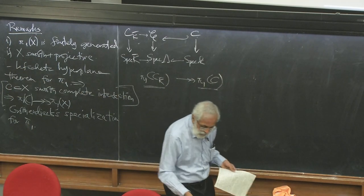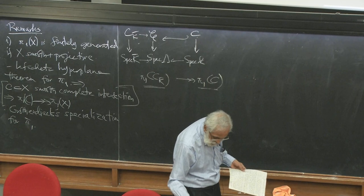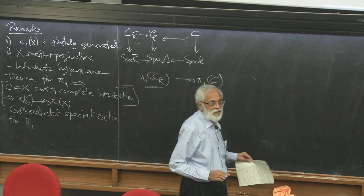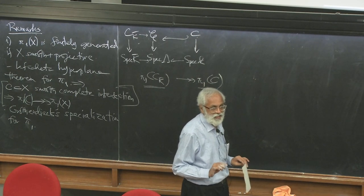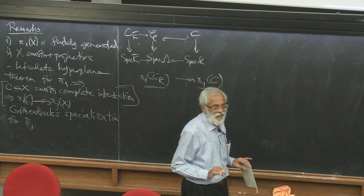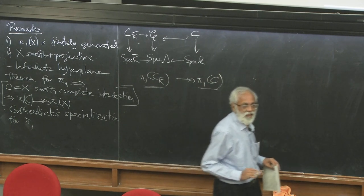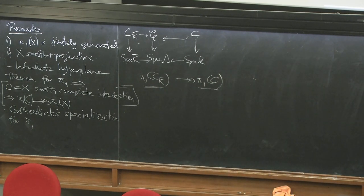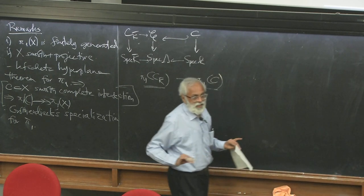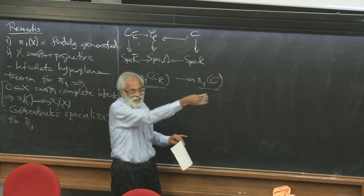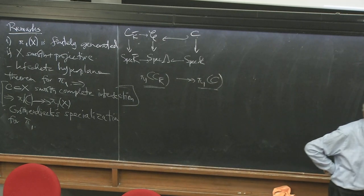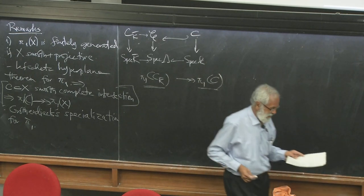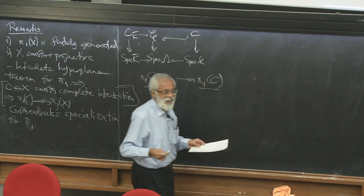So you've lost control of the relations — you only get a surjection each time, so you don't know finite presentation. In fact, SGA has a comment that quite possibly finite presentation is false for π₁ of curves in characteristic p — that's the speculation. But of course, it's not true for an affine curve — the relevant comment is for a smooth proper curve.